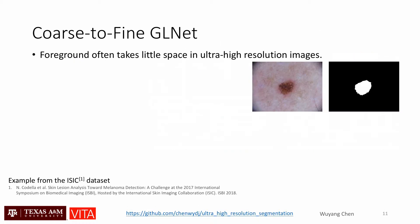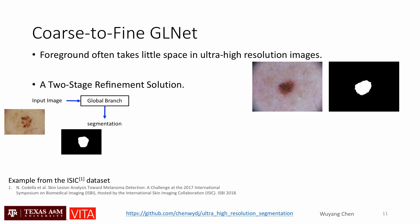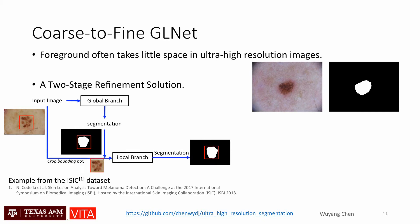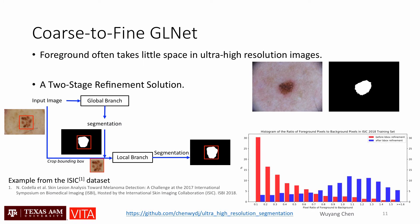In ultra-high resolution images, the foreground region is usually far less than the background, which may seriously damage the segmentation performance. To resolve this class imbalance problem, we present a two-stage coarse-to-fine variant of our GLNet. It first applies the global branch for coarse segmentation on downsampled images, and a bounding box is created for the segmented foreground region. Then, the bounded foreground in the original full-resolution image is fed into the local branch for further fine segmentation.